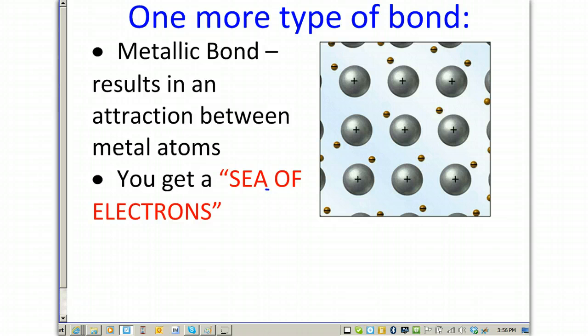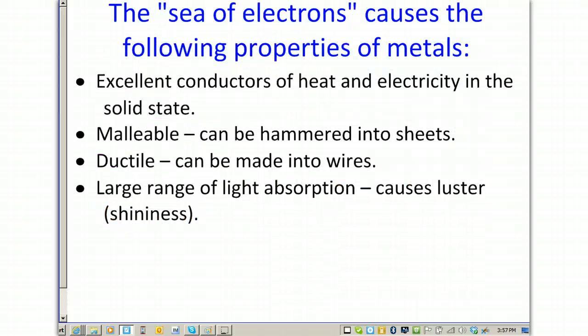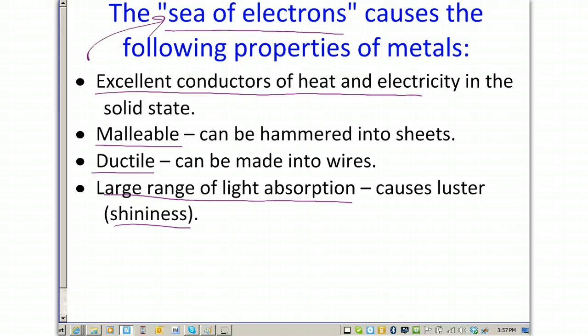One more type of bond is the metallic bond. And after this section, we won't really discuss it anymore because it's not very common in bonding. Metallic bonds result in an attraction between metal atoms. You get what's called a sea of electrons. Metallic bonds are responsible for the following properties: the good conductivity of heat and electricity of metals, the fact that they are malleable and ductile - can be hammered into a sheet or made into a wire - and the fact that they're so shiny, they have a large range of light absorption. These are all thanks to that sea of electrons.